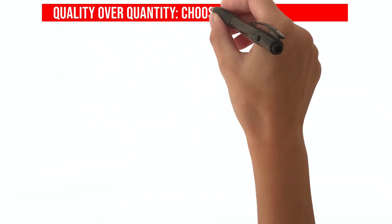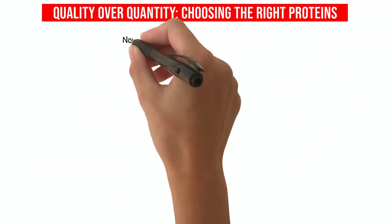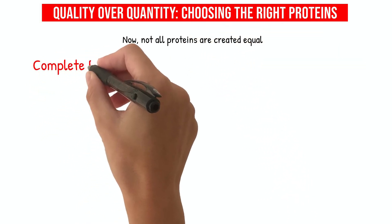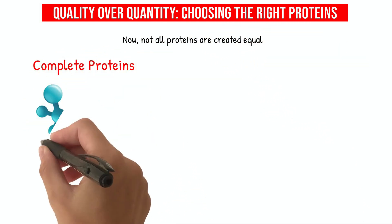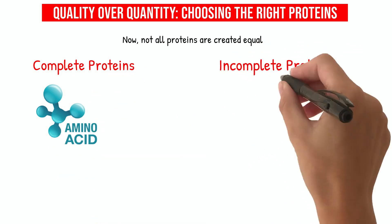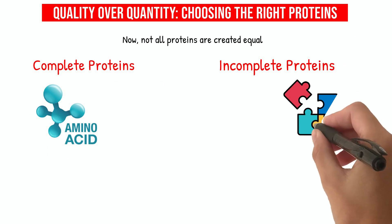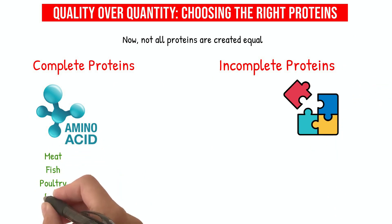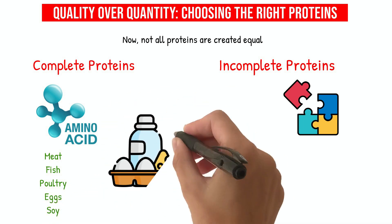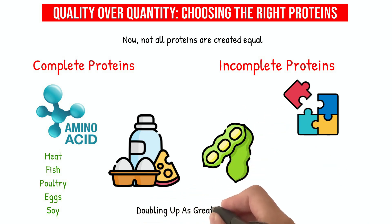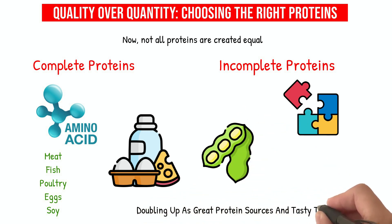Quality over quantity: choosing the right proteins. Not all proteins are created equal. There are complete proteins, packed with all the essential amino acids, and incomplete ones, which are like a puzzle missing a few pieces. Animal sources like meat, fish, poultry, eggs, and soy are your go-to for complete proteins. Dairy and soy products are also excellent choices, doubling up as great protein sources and tasty treats.